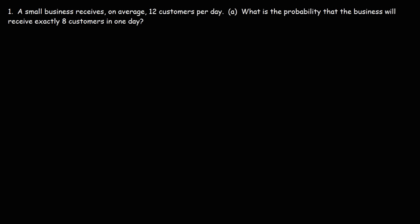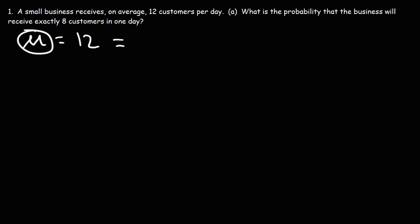The first thing you want to keep in mind is that the time interval is the same — it doesn't change. So the mean is 12 customers per day, or the average. Some textbooks will use lambda for the mean; I'm going to use the mu symbol. Now to calculate the probability, we're going to use this formula.